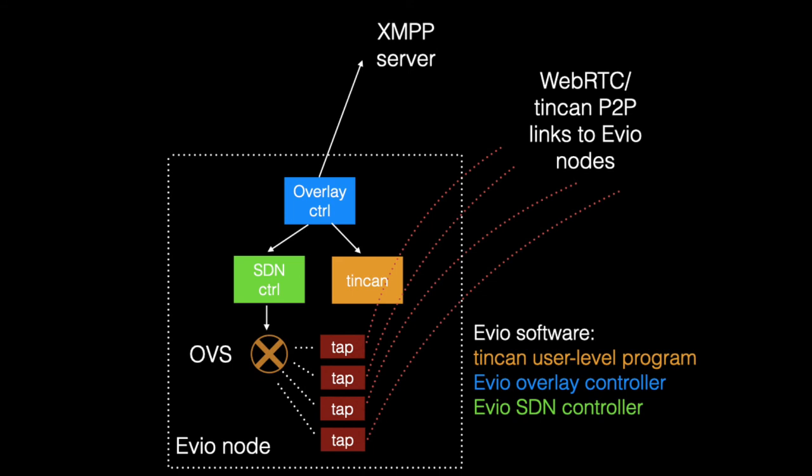We also have the SDN controller that programs forwarding rules over every OpenVSwitch. Notably, there is no single centralized controller in this architecture — every node has its own overlay and SDN controllers, allowing the system to scale.